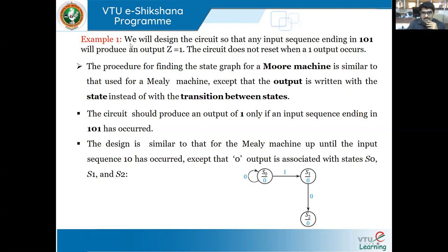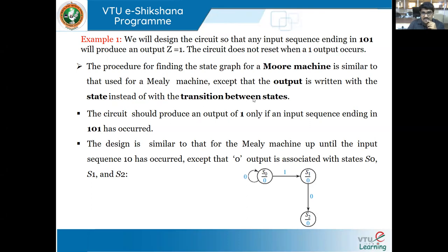The objective of the problem is to design the circuit so that any input sequence ending in 1, 0, 1 will produce an output Z equal to 1. The circuit does not reset when one output occurs. For this problem statement, we had built the Mealy machine. Now for the same problem statement, we will try to build a Moore machine. The procedure for finding the state graph for the Moore machine is similar to that used for the Mealy machine, except that the output is written with the state instead of with the transition between the states.